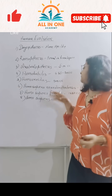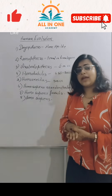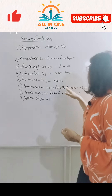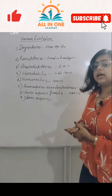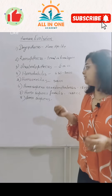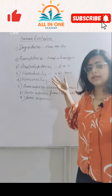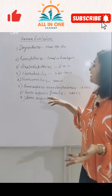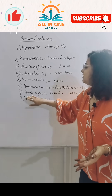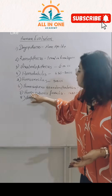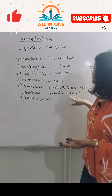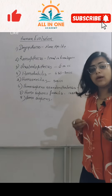Homo erectus were the first ones who started to eat meat — that means they were non-vegetarians, unlike the earlier fruit-eating vegetarians. They had a brain power of 900 cc. Homo sapiens neanderthalensis had a brain power of 1500 cc, much higher than Homo erectus.